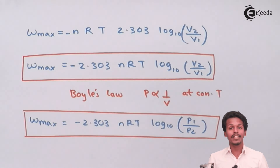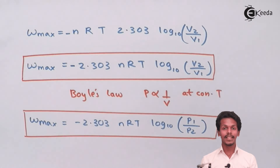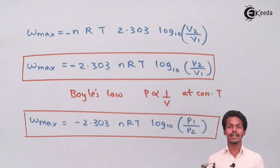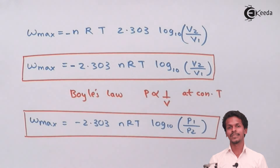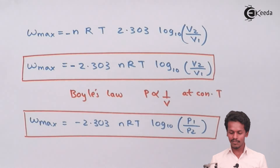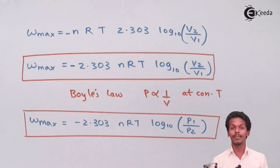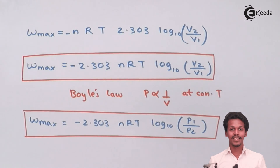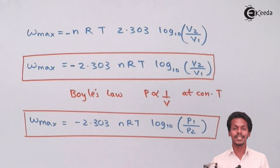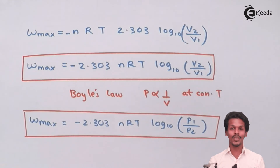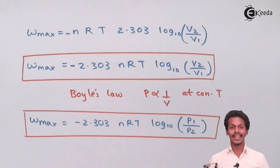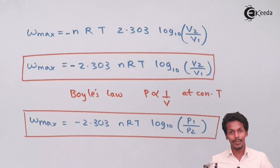The maximum work is obtained by integrating the small changes in work at each step. This indicates that the external pressure is infinitesimally smaller than the gas pressure — the driving force and opposing force have a very small difference — allowing maximum work during gas expansion. Thank you for watching. Share this video with friends and don't forget to subscribe to the channel.